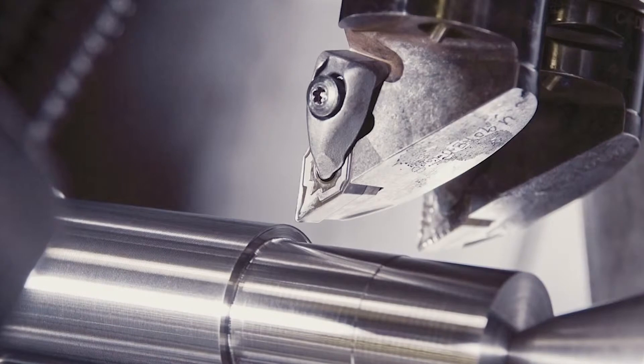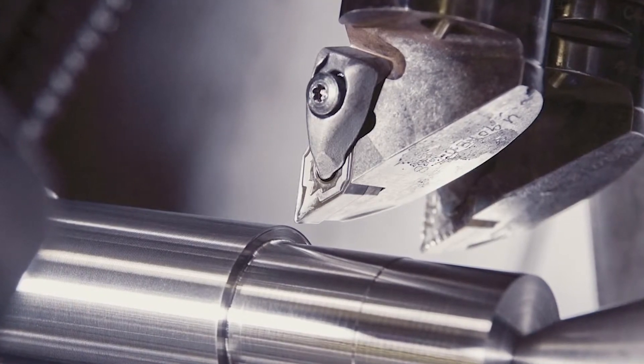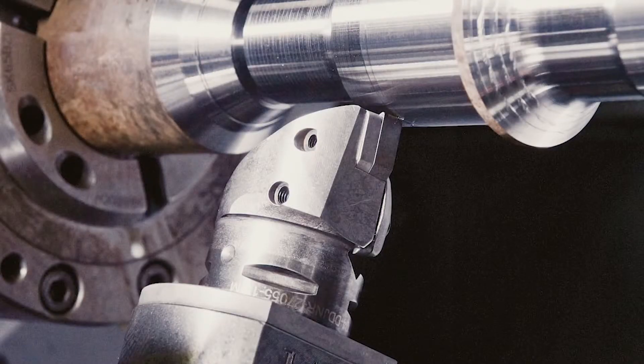We don't put it in for any of the roughers, but we put the geometries in for the two finish turn tools and the cutoff tool. Between those, putting in the tool geometry, you repeat within 10 microns, so we hold that 30 micron tolerance pretty comfortably.